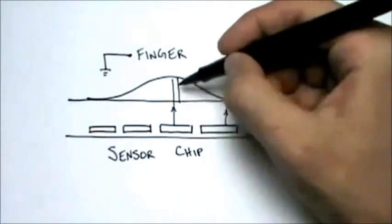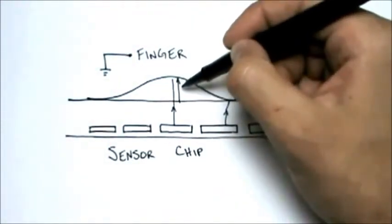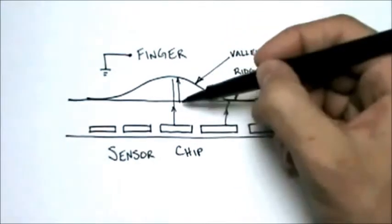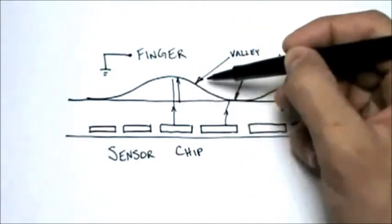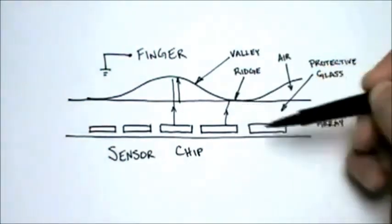Additionally, field lines that terminate into a valley must travel through a distance of air, and air has a particularly low permittivity or dielectric constant than the glass. Therefore, the capacitance of this plate, which is covered by a valley, is a little bit lower than the capacitance of this plate, which is covered by a ridge.